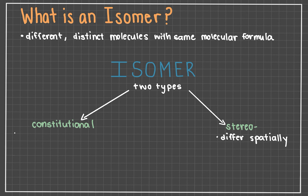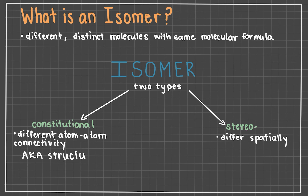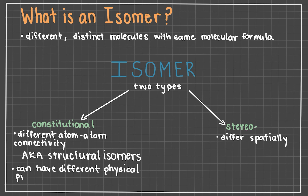Stereo isomers differ spatially, but we'll dive deeper into those in a separate video. If two molecules have the same molecular formula but differ in the way their atoms are connected or bonded — i.e., their constitution — then they are considered constitutional isomers. Constitutional isomers are occasionally called structural isomers because the two molecules differ in their atomic structures. These differences in atomic bonding can yield different physical properties too.